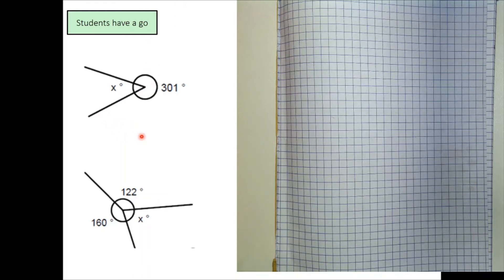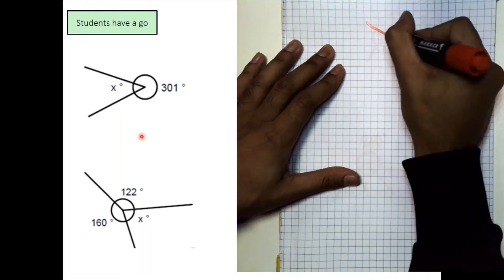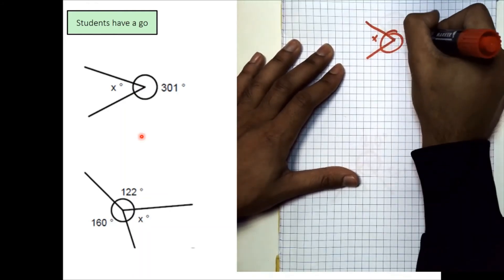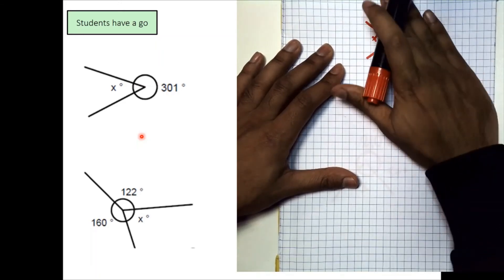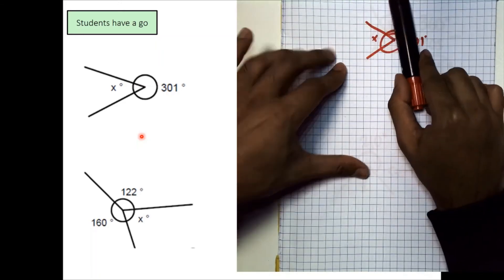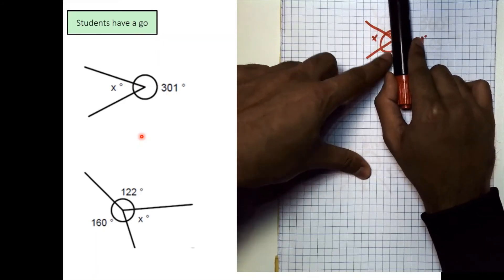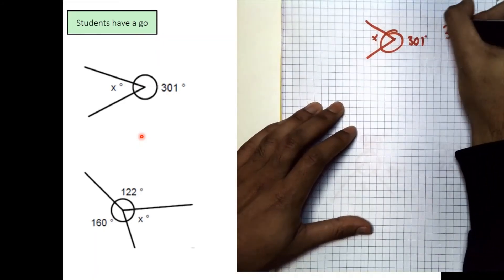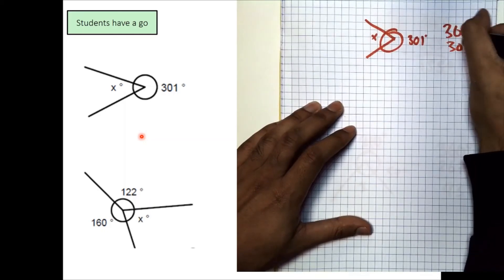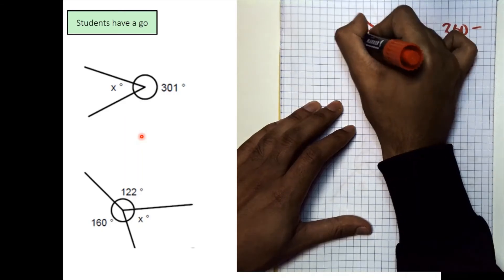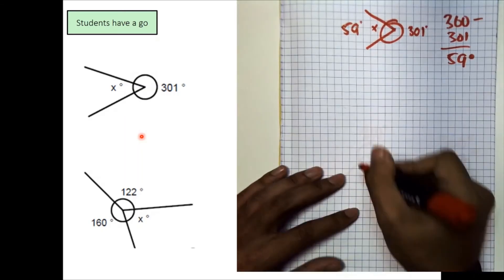So hopefully now that you've had a go, I'll also go through this question for you quickly. So, you have our point, x is over here, becomes 301 degrees. Well, over here, there's just one angle, there's only two angles in total that make it 360 and there's only one that we'd take away and that's 301. 360 take away 301. This would give us a total of 59 degrees for our x over here.